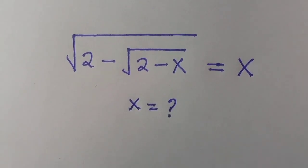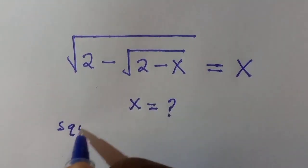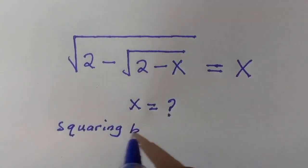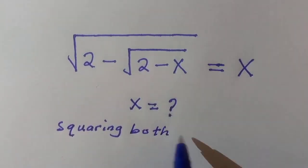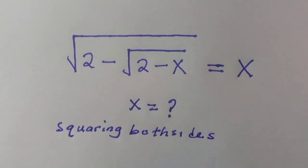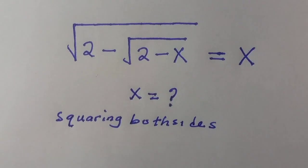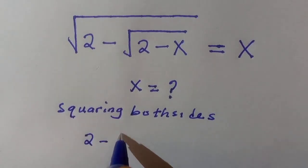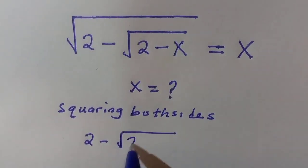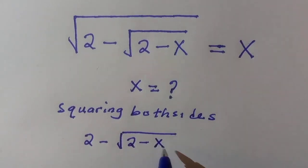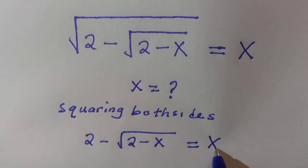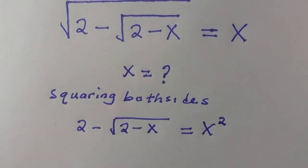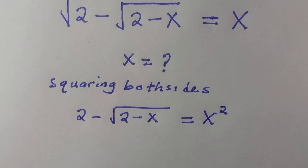The first thing I'm going to do is take the square of both sides, just to get rid of the square root. By applying that, we are going to have 2 minus square root of 2 minus x equals x squared.